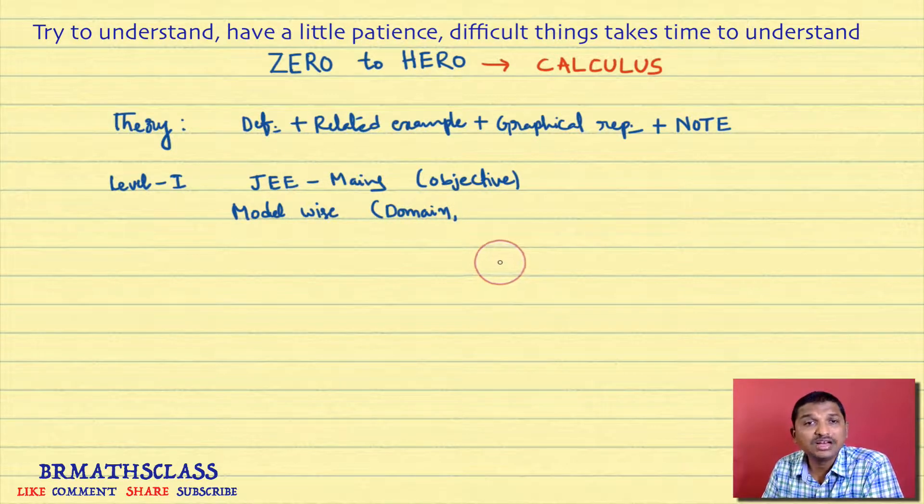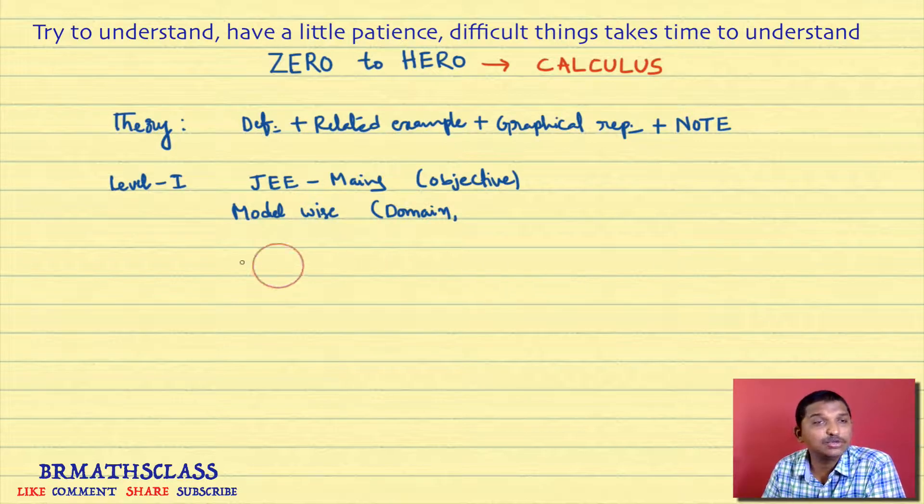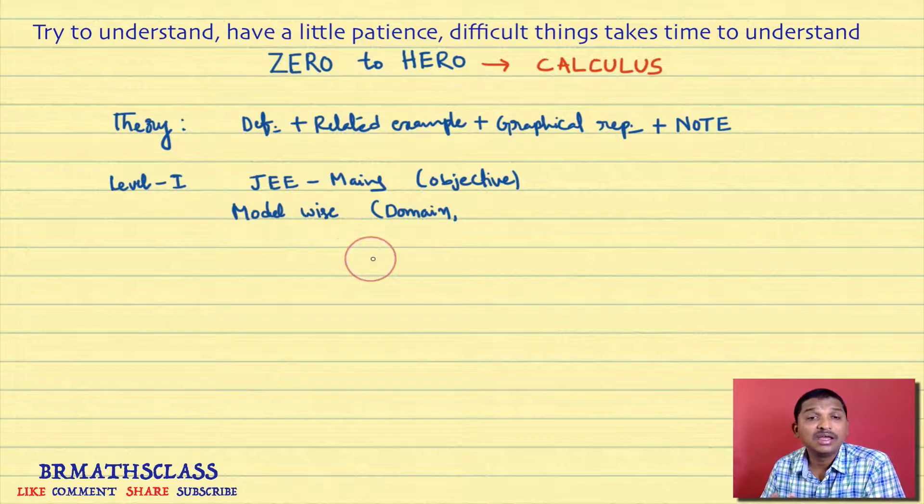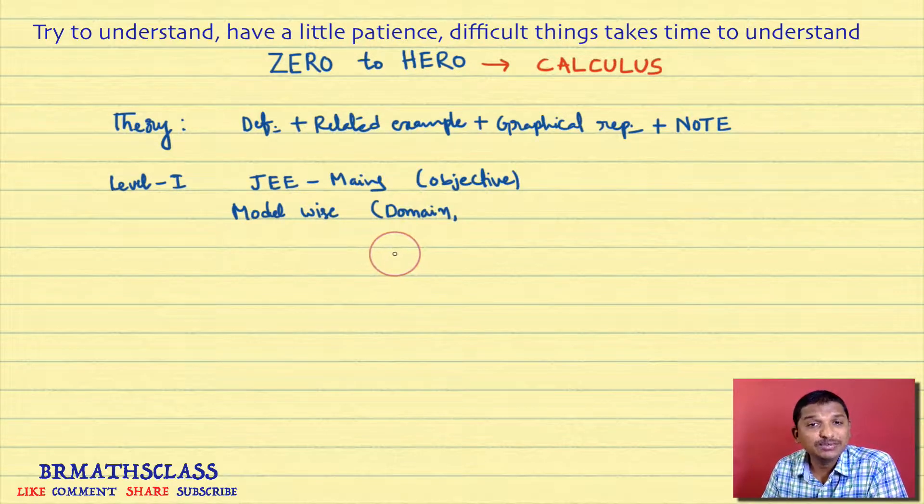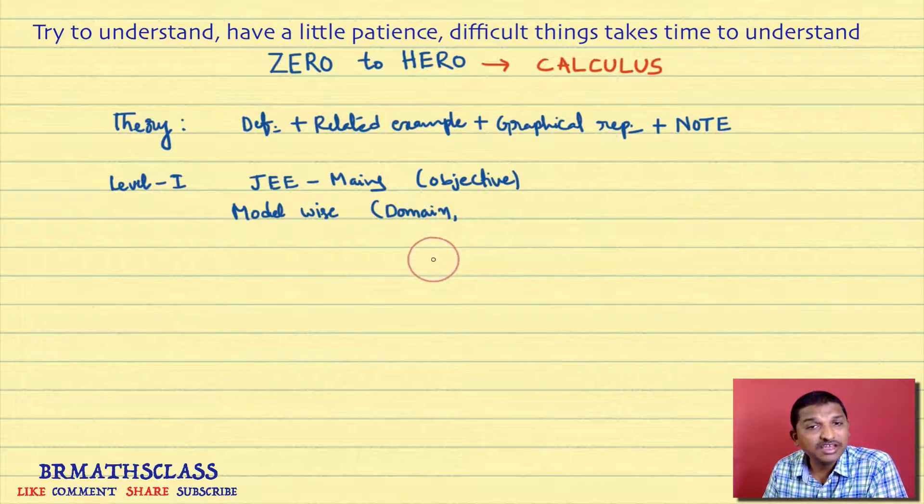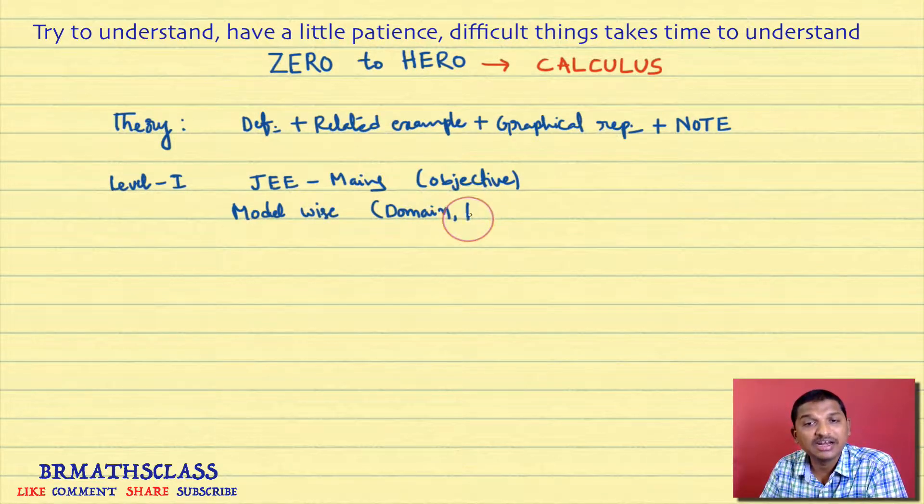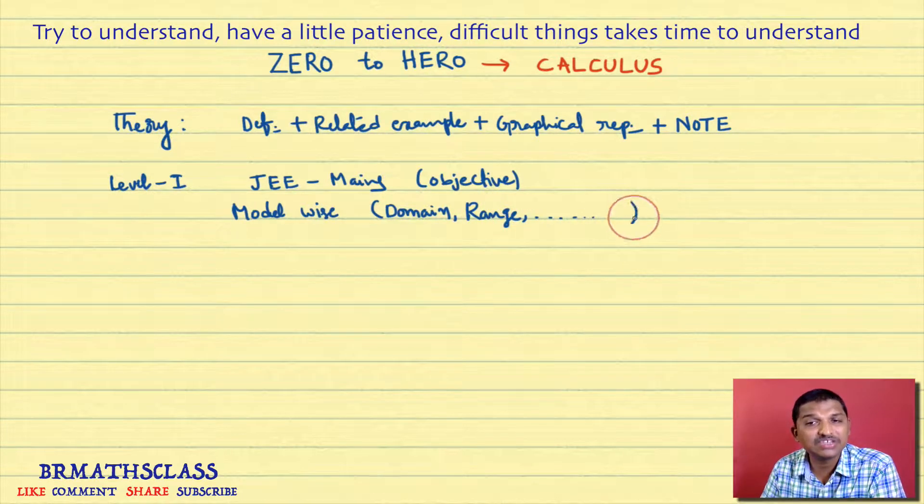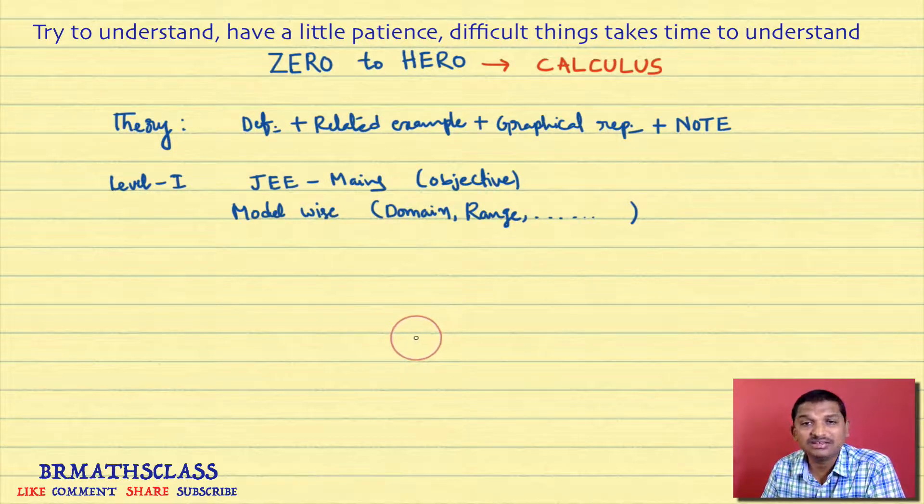All the problems related to domain of the function come to this Level 1. This is Zero to Hero series. First I will do some easy problems, then little bit tougher problems. At the end, the JEE Mains level problems. Model wise, we will do all the range problems. Like that, so many models are there in functions chapter. Model wise, objective problems we will do in this Level 1.